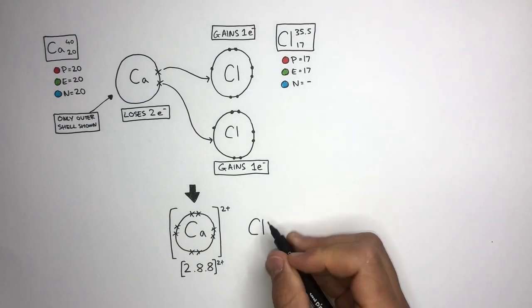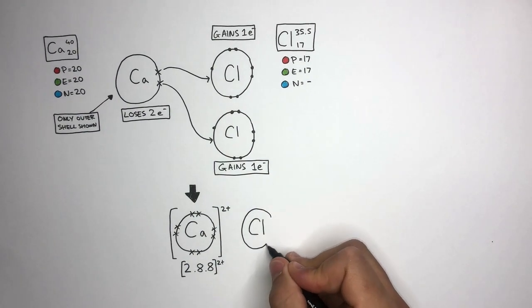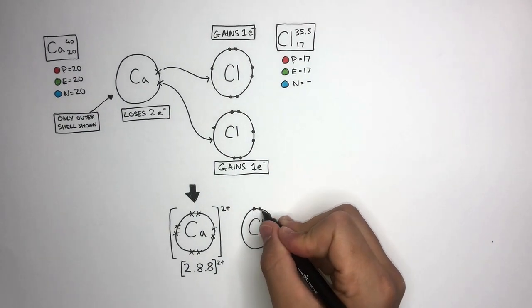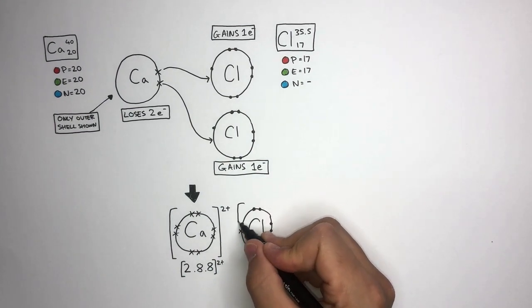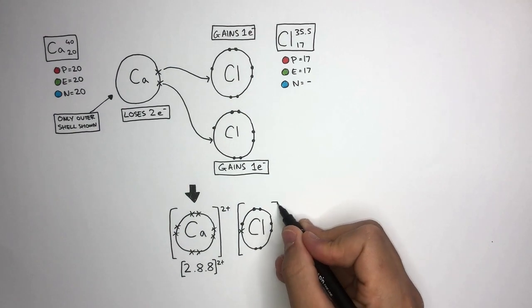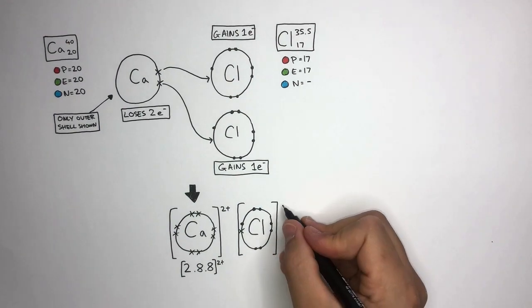Each Chlorine ion will have eight electrons in its outer shell. The seven dots are from the original Chlorine atom, and then the cross is from the Calcium atom. Like before, you draw the square brackets around the ion and the charge in the top right.